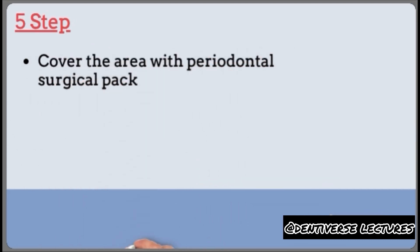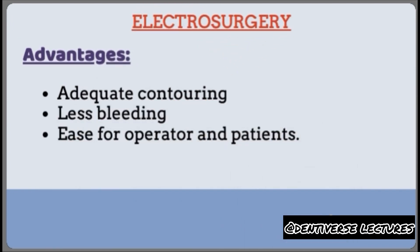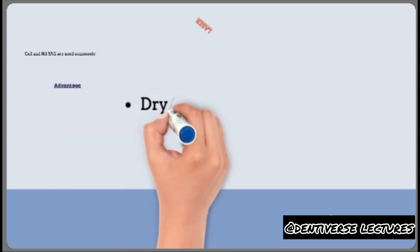The fifth and last step is to cover the area with a periodontal surgical pack. The second type of gingivectomy is by electrosurgery. Advantages include adequate contouring of tissues, less bleeding, and ease for both operator and patient. Disadvantages are: it cannot be used in cardiac pacemaker patients; if the electrode accidentally touches bone it leads to irreparable damage; and contact with the root causes areas of cementum burns.